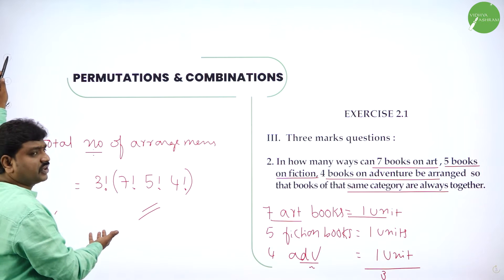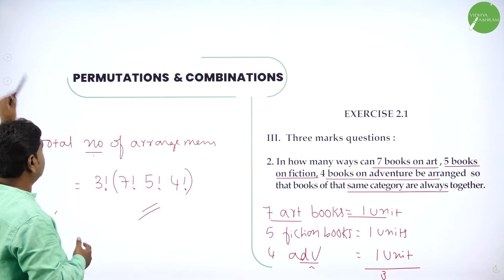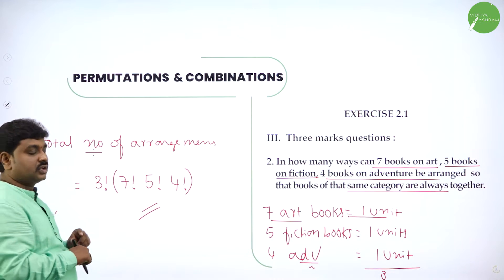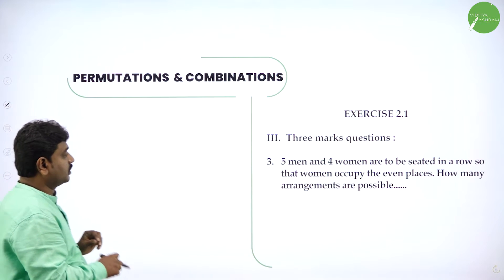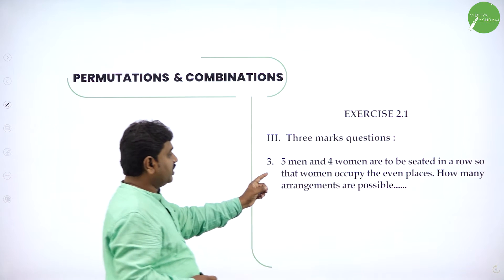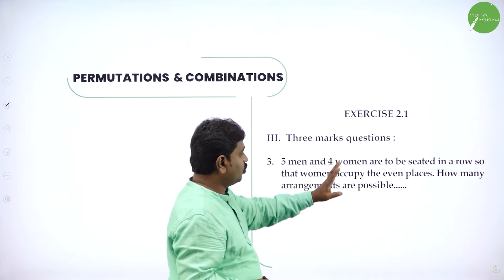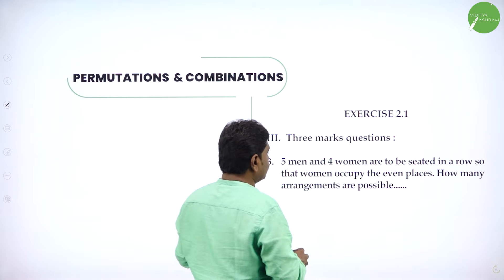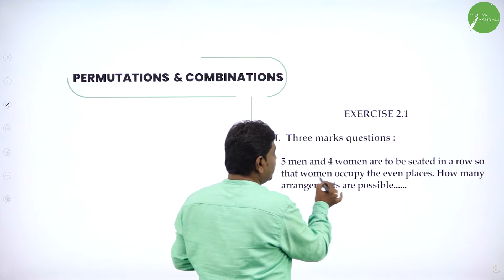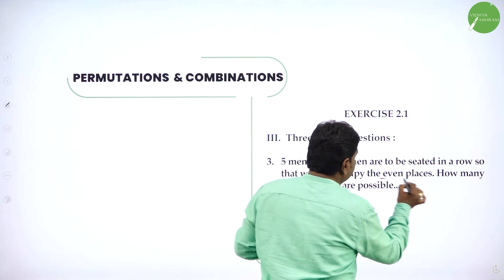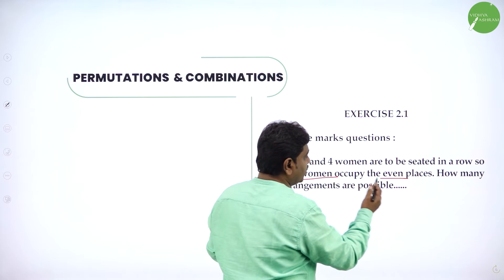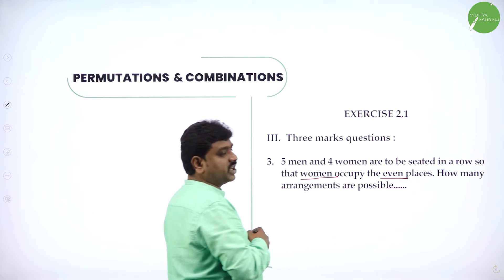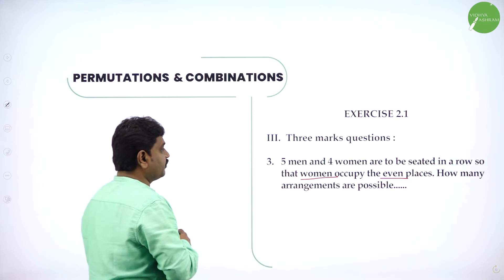Your exercise will give the same answer — they will not expand this. Next: 5 men and 4 women are to be seated in a row so that women occupy even places. How many possible arrangements are there?